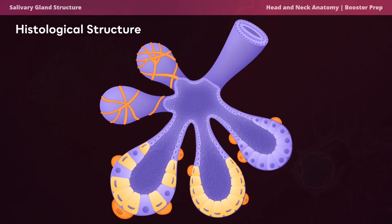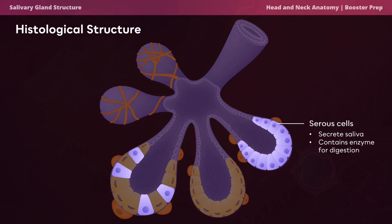There are three main cell types: serous cells, mucus cells, and myoepithelial cells. Serous cells secrete serous saliva containing enzymes like amylase, lipase, and lysozyme. Amylase and lipase play important roles in the initial stages of digestion, whereas lysozyme provides antibacterial properties and inhibits growth of bacteria in the mouth.